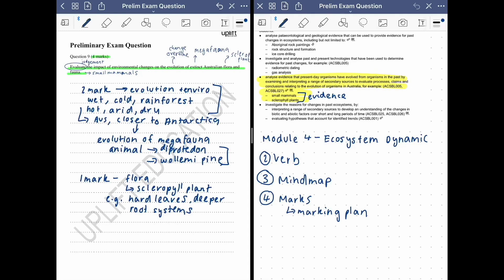Hence the evolution. Because remember evolution is a change of characteristics over time due to environmental pressures. So that would be one mark. The other mark would go towards explaining our fauna. So that would be the evolution of our small mammals. So previously we had the large mammals aka mega fauna. Example we've got above here is diprotodon.